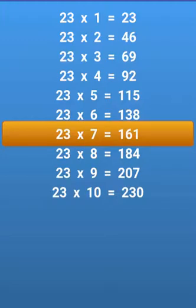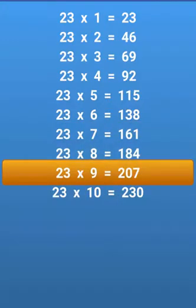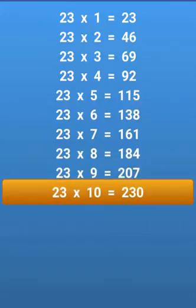23 times 7 equals 161, 23 times 8 equals 184, 23 times 9 equals 207, 23 times 10 equals 230.